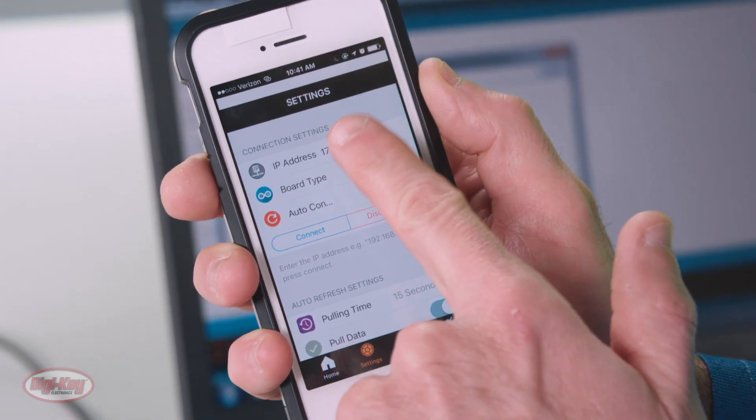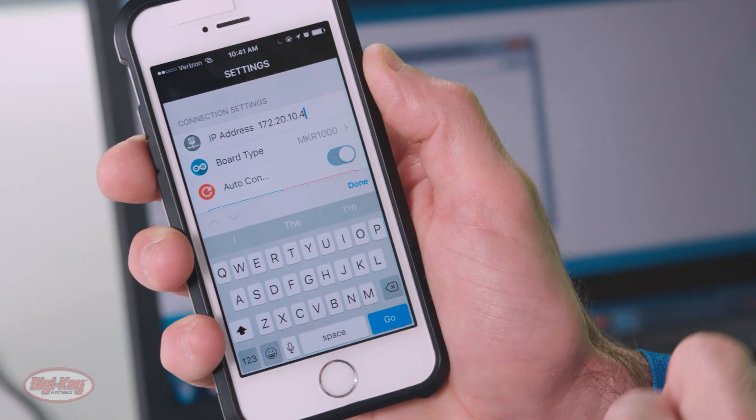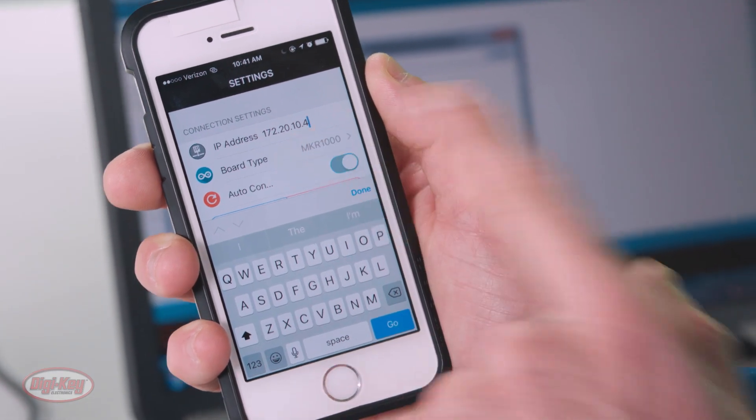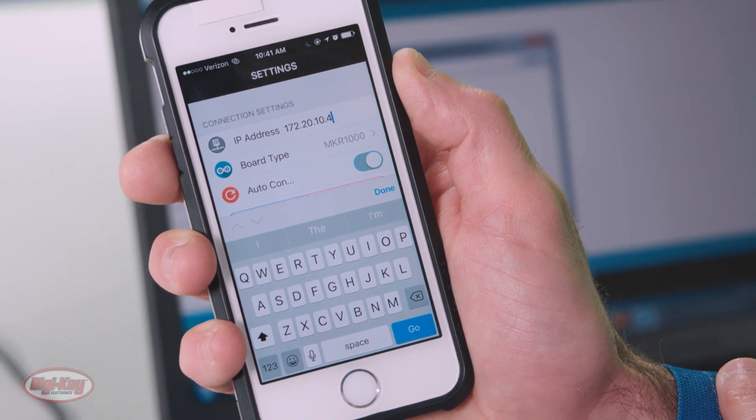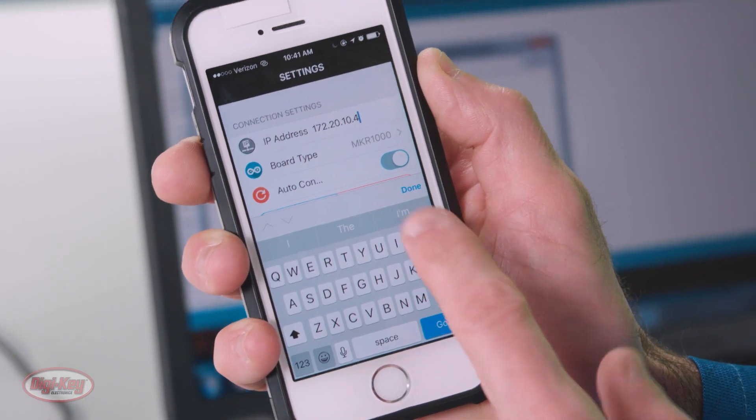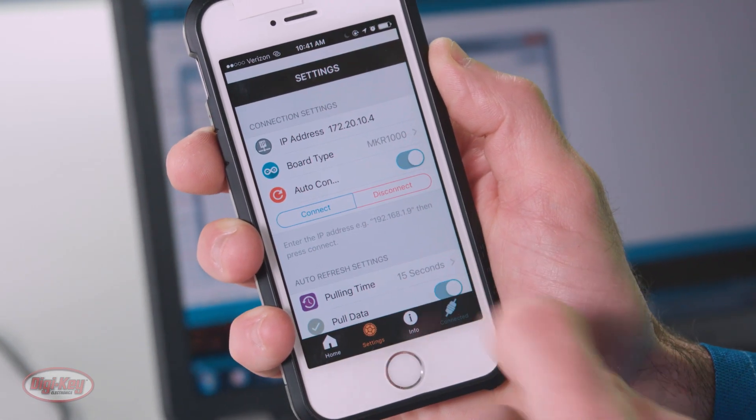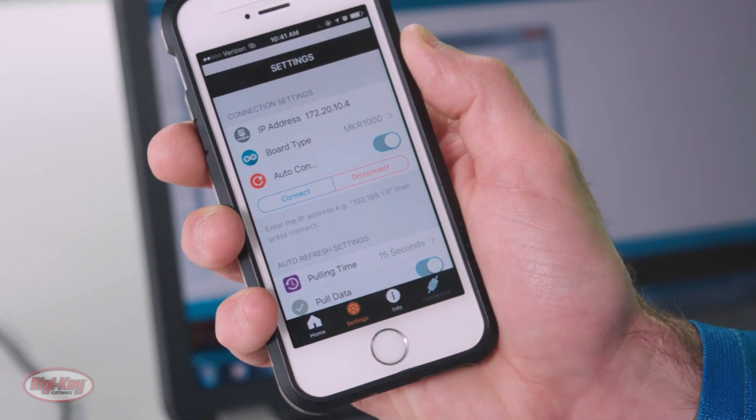And it actually has already connected. But for the steps, you'll have to go in and type in the IP address. This is the same IP address that we got from the serial monitor on the Arduino IDE. So click done, and you would click connect. But as we can see down here, it's already connected.